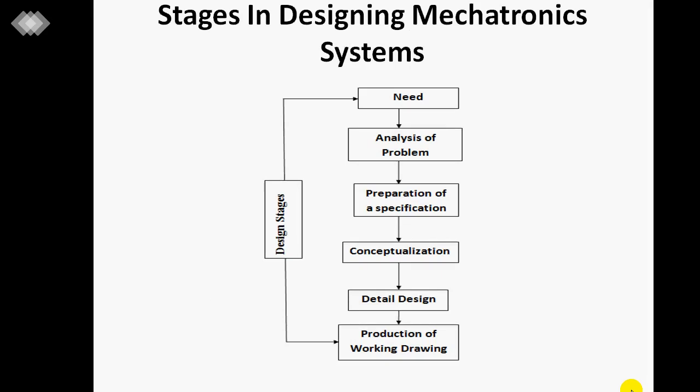First, we discuss the stages in the mechatronics system. Stage one is the need for design, stage two is the analysis of the product, stage three is the preparation of specification, stage four is conceptualization, stage five is the detailed design, and stage six is the production of working drawings.